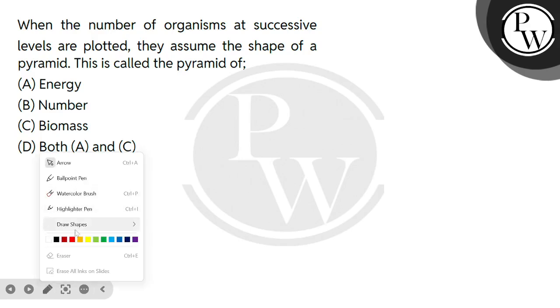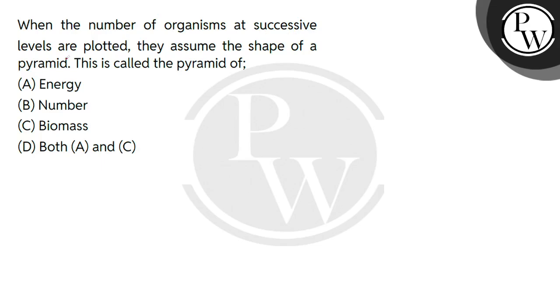Hello, let's read the question first. The question says: when the number of organisms at successive levels are plotted, they assume the shape of a pyramid. This pyramid is called?